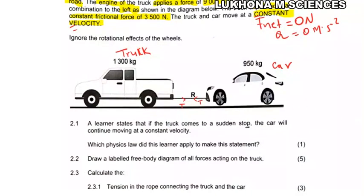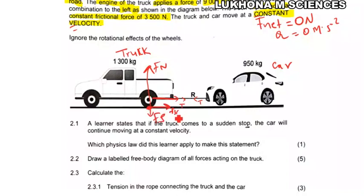Now we need to draw the free body diagrams for both objects. For the truck, we have the normal force, fg (gravitational force), tension, friction, and the applied engine force — that gives five forces. For the car, we have the tension pulling it along.